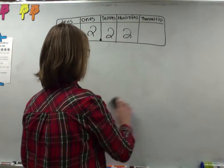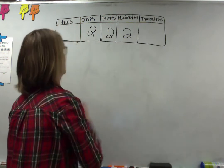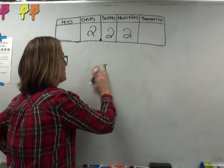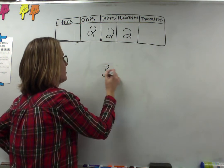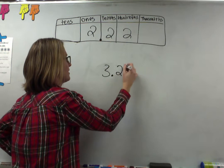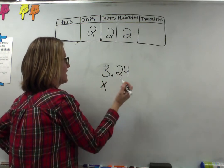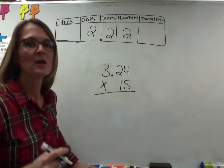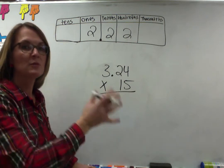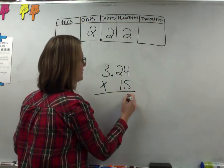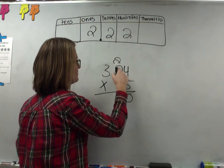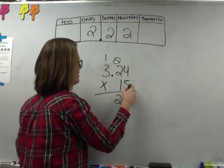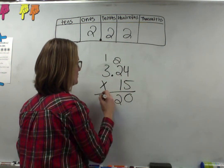If it was an even larger number, let's say we have a number like 3.24 times 15. We can totally do that. So again you just multiply like normal. 5 times 4 is 20. 5 times 2 is 10 plus 2 is 12. Put down 2, carry the 1. 5 times 3 is 15 plus 1 is 16.